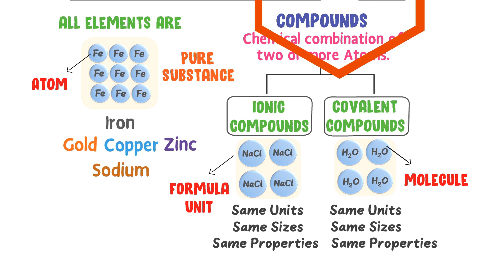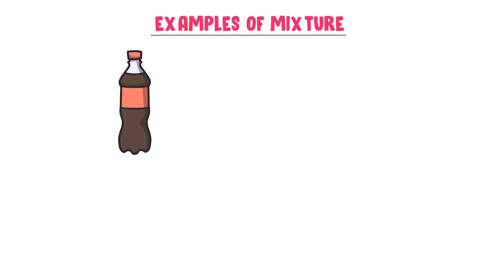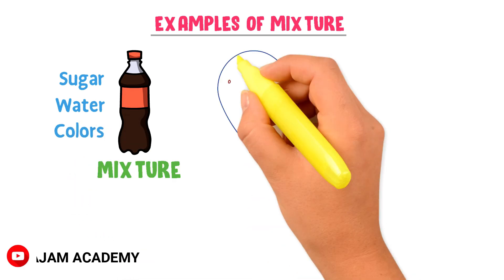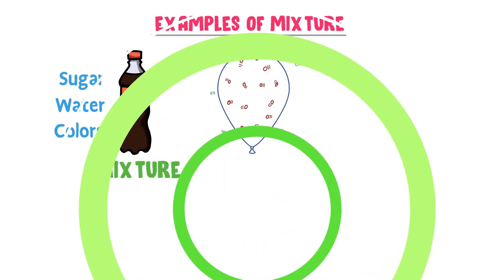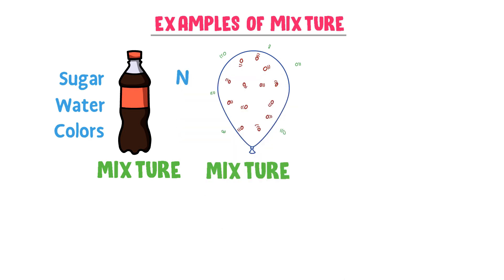Here are some examples of mixtures. Carbonated drinks are not pure substances — they are mixtures because they are composed of sugar, water, and different colors mixed together physically. Secondly, air is not a pure substance; it is a mixture of different gases like nitrogen and oxygen.